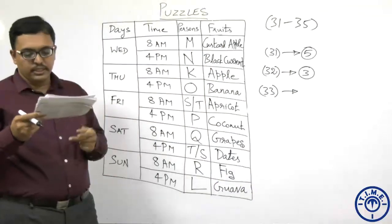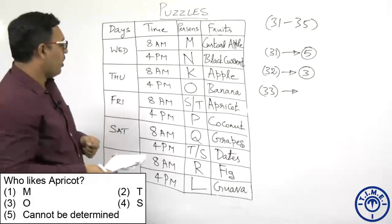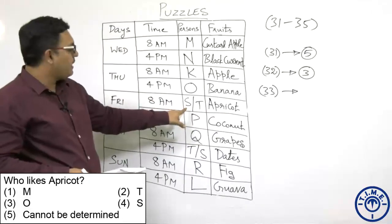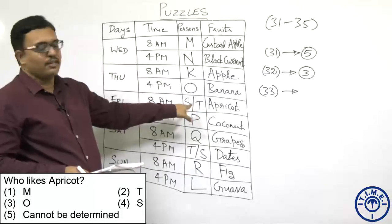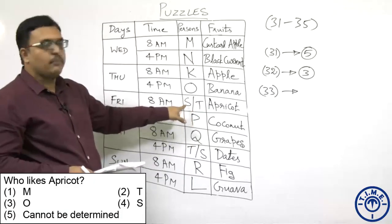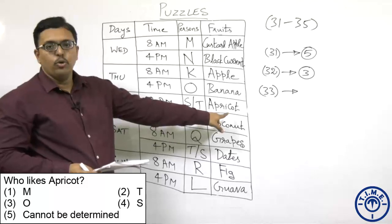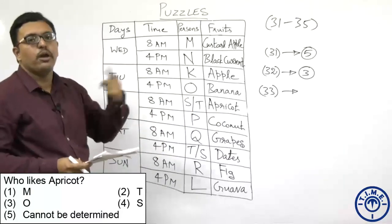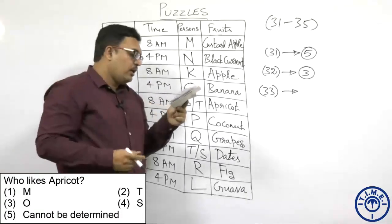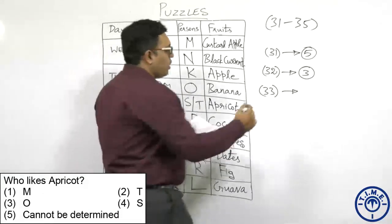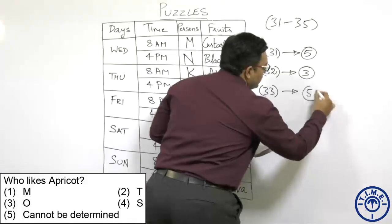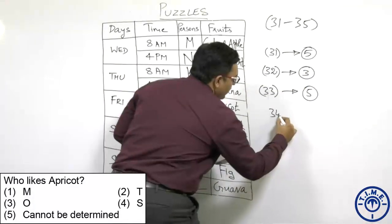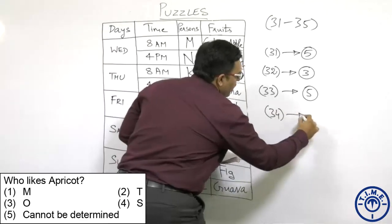Question 33: Who likes apricot? Apricot is at Wednesday 4PM — it can be either S or T. We do not know which one. So the answer cannot be determined. The fifth option, 'cannot be determined,' is the most appropriate answer for question 33.